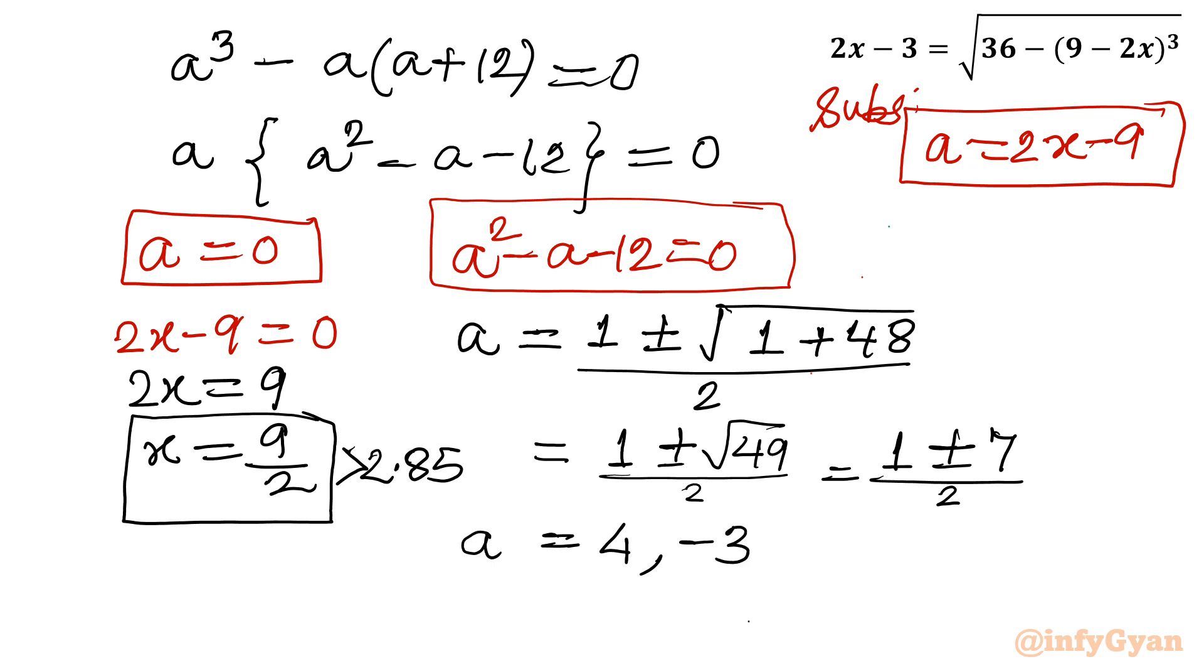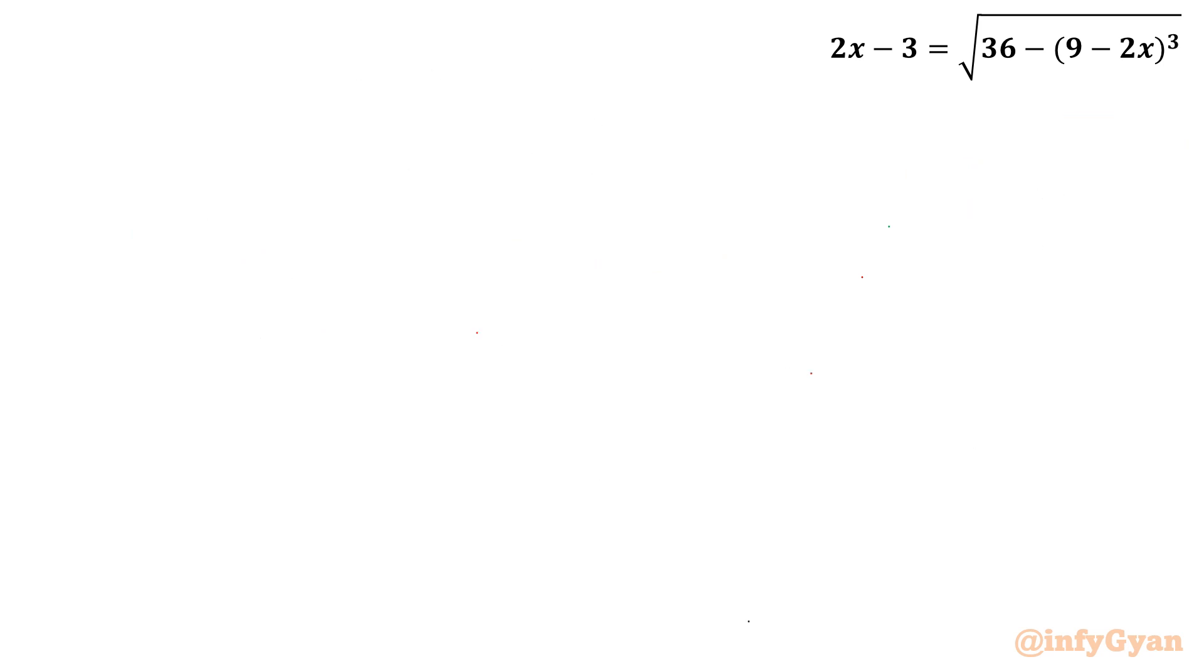Now I will write the value of substitution a. 2x minus 9 equals 4 and minus 3. This is our a value. Now I will add 9 to both sides, so 2x equals 9 plus 4 and 9 minus 3.